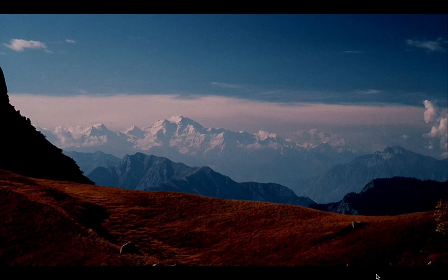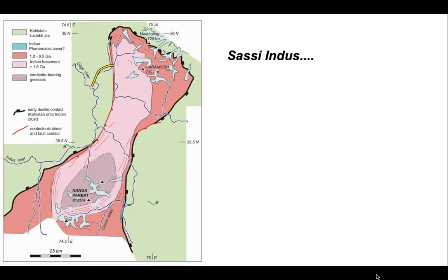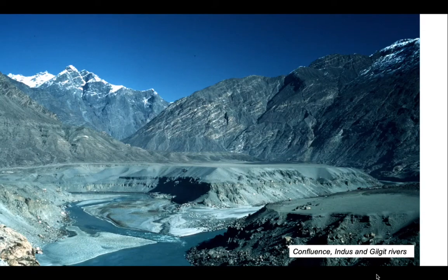The landscape this creates is truly dramatic. Nanga Parbat sits at a shade over 8,000 metres above sea level, and the Indus Valley, only 20 kilometres away from the summit, is only one kilometre above sea level — it's the greatest relief in the continents on Earth. The first part of our story takes us into the Nanga Parbat Massif along the Indus Valley: a transect into the main mantle thrust to understand the kinematics and which way the MMT moved. The transect starts at the confluence of the Indus and Gilgit rivers.